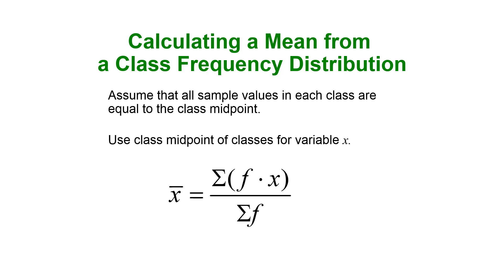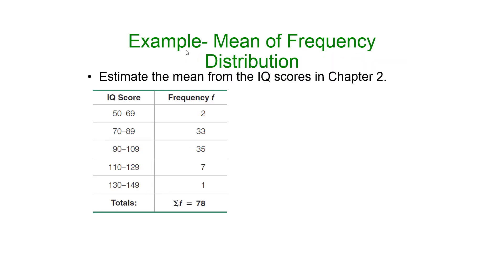The only thing that changes is what we use for our x. Because in a class frequency distribution or a grouped frequency distribution, we don't know the individual data values.